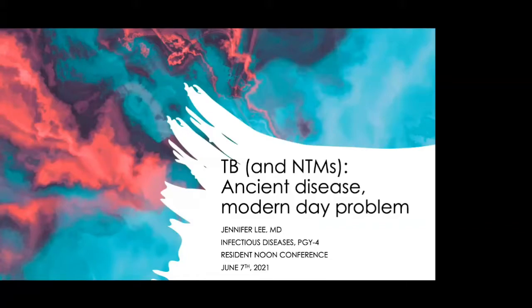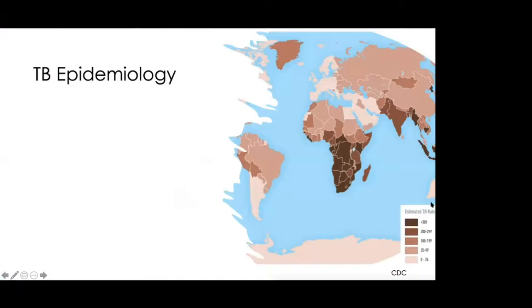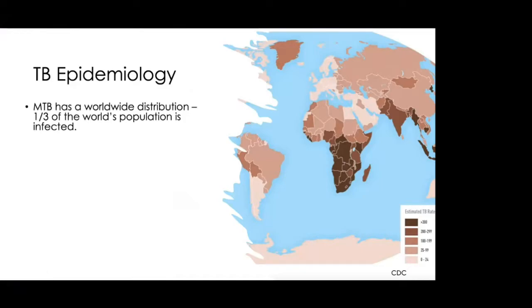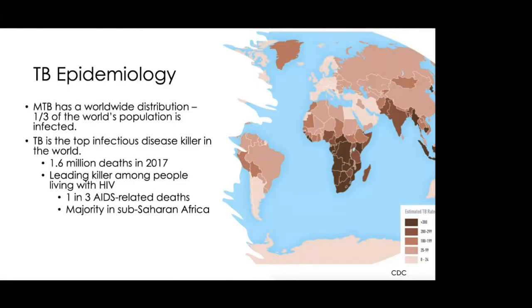The title of this talk is 'TB: An Ancient Disease but a Modern Problem,' and we'll also cover its cousins, the NTMs. TB has a worldwide distribution and one-third of the world's population is affected. TB is the top infectious disease killer in the world — in 2017 it was responsible for 1.6 million deaths, and it's a leading killer among people who live with HIV.